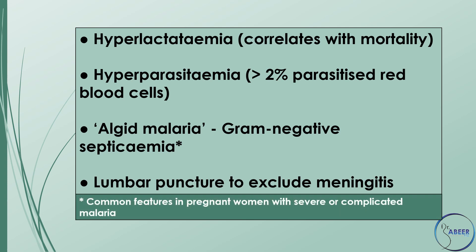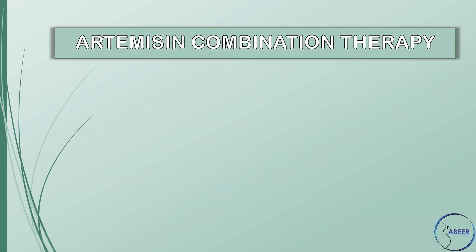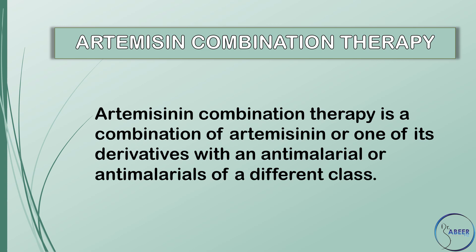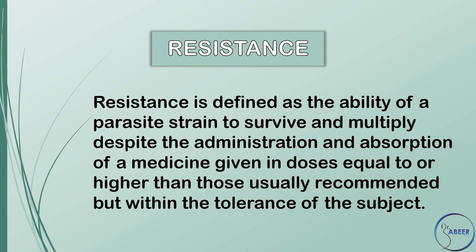Hyperparasitemia — greater than 2% parasitized red blood cells — algid malaria, gram-negative septicemia, and lumbar puncture to exclude meningitis are common features in pregnant women with severe or complicated malaria. Artemisinin combination therapy (ACT) is a combination of artemisinin or one of its derivatives with an anti-malarial or anti-malarials of a different class. Resistance is defined as the ability of a parasite strain to survive and multiply despite the administration and absorption of a medicine given in doses equal to or higher than those usually recommended, but within the tolerance of the subject.